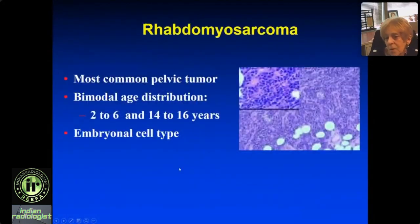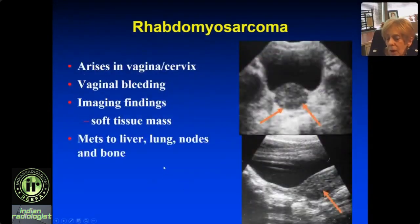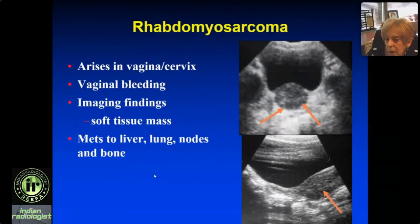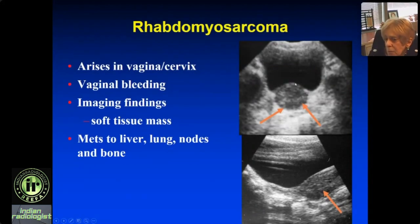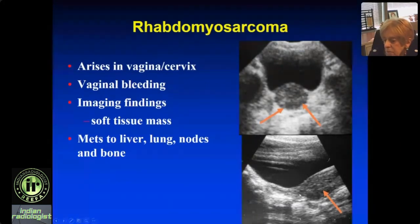The tumor of the vagina and cervix is rhabdomyosarcoma — the most common pelvic tumor in children. It's a small blue cell tumor with a bimodal age distribution: under six and in adolescents. It arises in the vagina and cervix, not the uterus. It presents with vaginal bleeding and as a soft tissue mass on imaging. Metastases go to gut or liver, lung, nodes, and bone. On imaging, behind the bladder: look at the long axis view — you see the prepubertal uterus as a small tube, and this is a vagina filled with tumor — rhabdomyosarcoma.